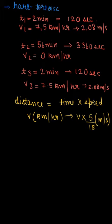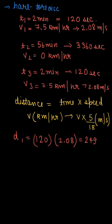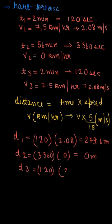Since we need to find the distance, for T1 and V1 the distance D1 equals 120 seconds into 2.08 meter per second, which gives 249.6 meters. D2 equals 3,360 seconds into 0, so D2 equals 0 meters. For D3, this equals 120 seconds into 2.08, which also equals 249.6 meters, same as D1.